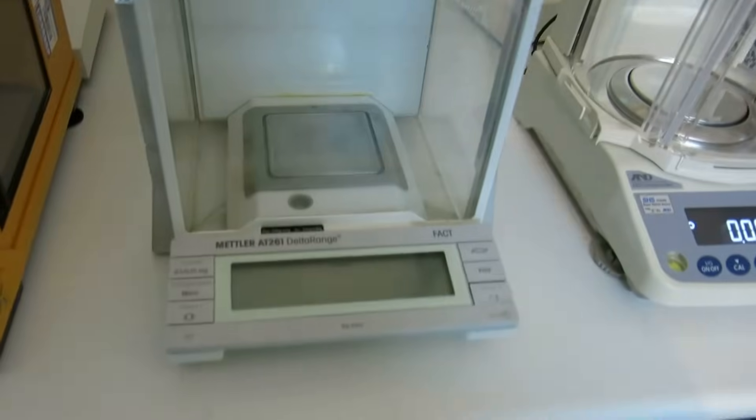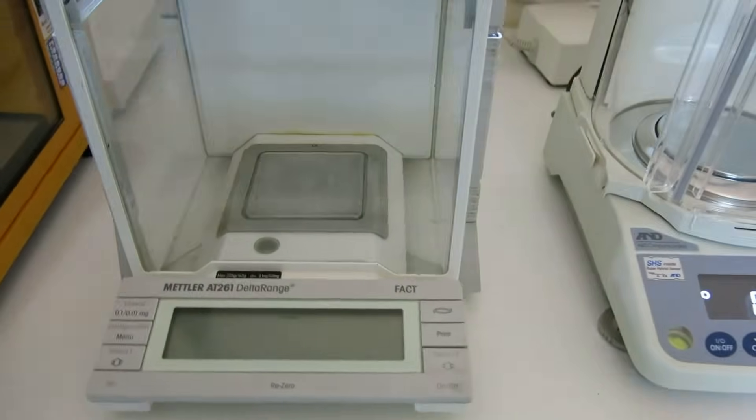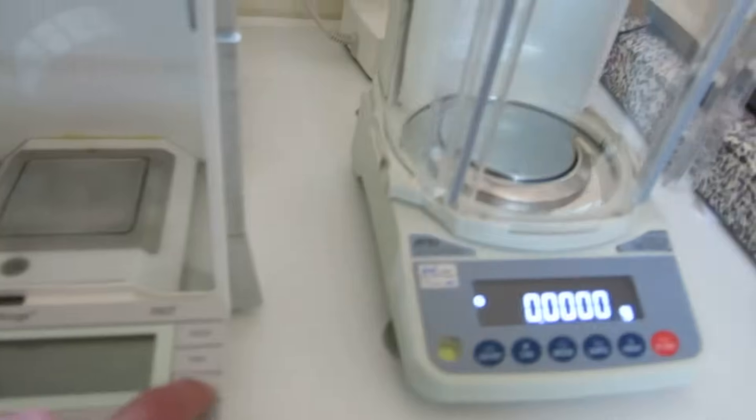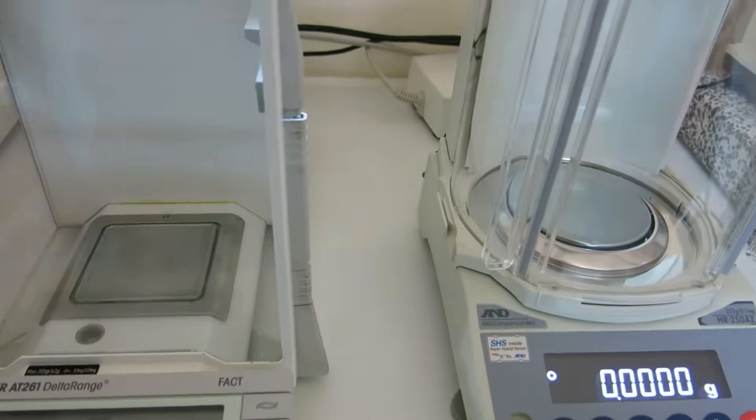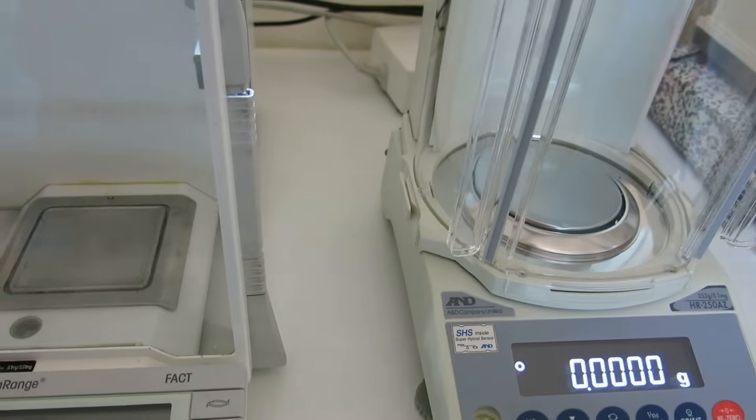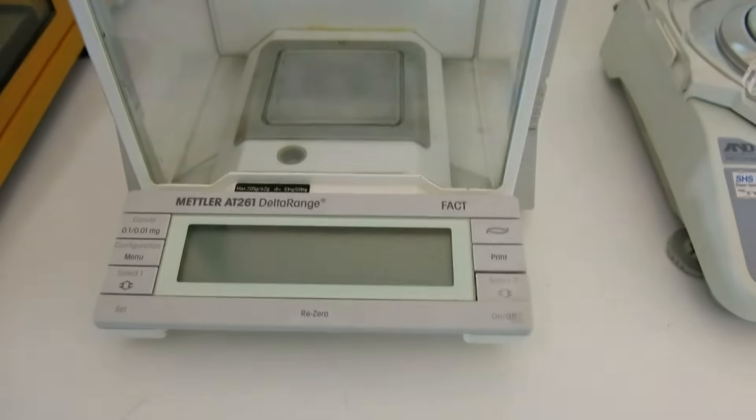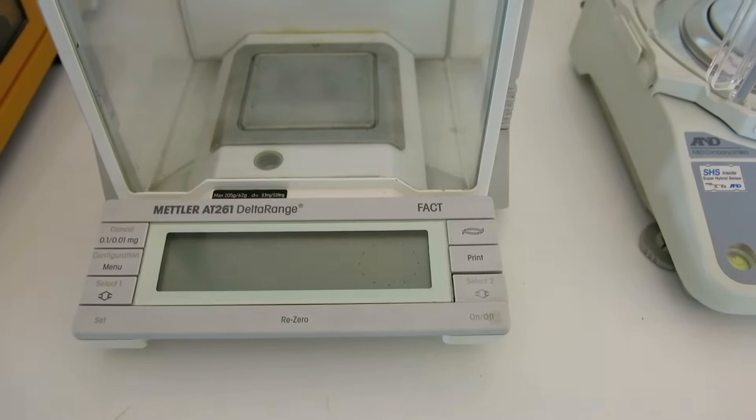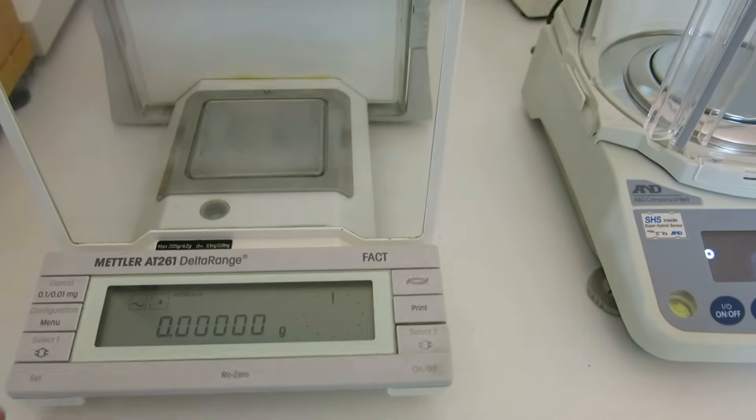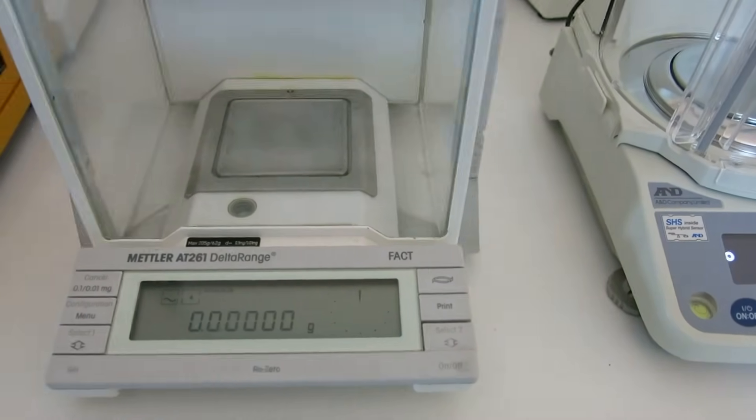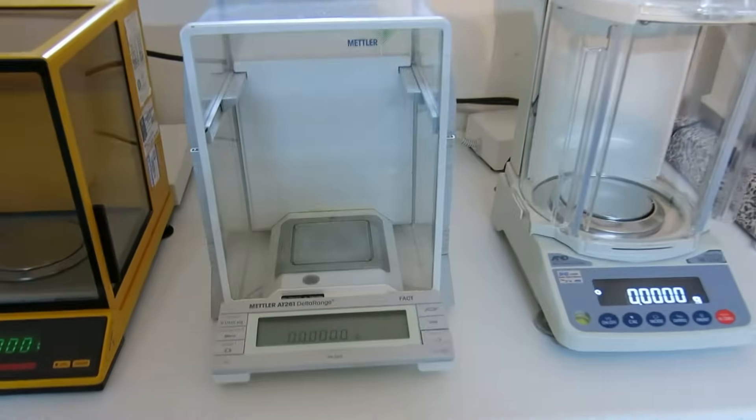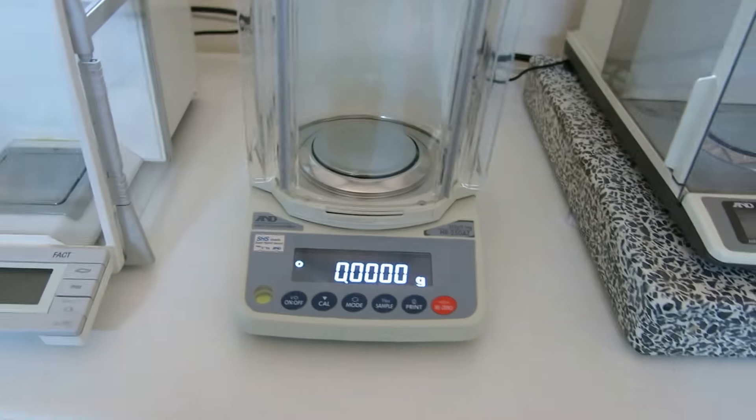We then move on to the Mettler AT261, which is a 5 decimal place balance. Let's switch it on. Let's put the power on here. It goes through its self-test. There we go. You can see the action there working pretty well. So that's a 5dp.